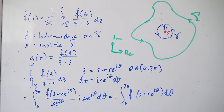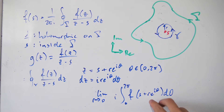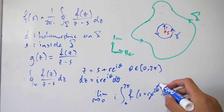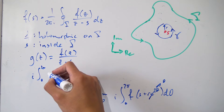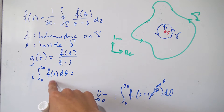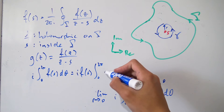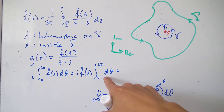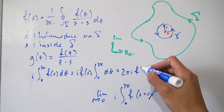Now we take the limit as r approaches zero. As r gets smaller and smaller, the term r·e^(iθ) vanishes to zero. So we're left with i times the integral from 0 to 2π of f(s) dθ. We can bring f(s) outside as a constant, giving i·f(s) times the integral from 0 to 2π of dθ. Integrating and plugging in the bounds gives 2π, so we get 2π·i·f(s).